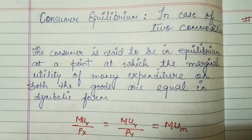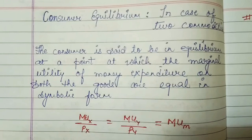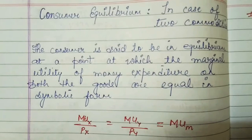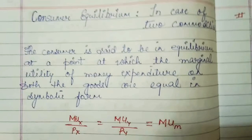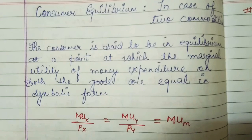Now we are going to see consumer equilibrium in case of two commodities. A consumer is said to be in equilibrium at a point at which the marginal utility of money expenditure on both goods are equal. In symbolic form, the formula is: MUx / Px = MUy / Py = MUm.